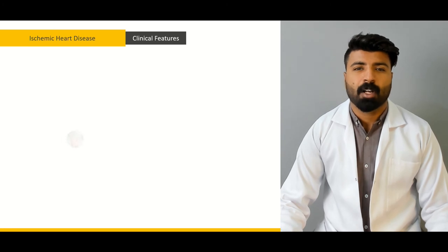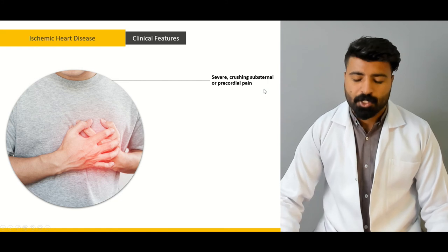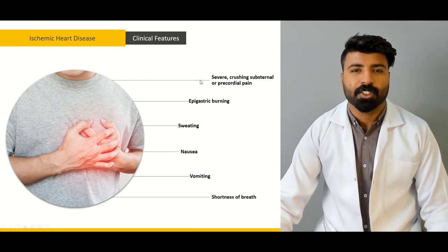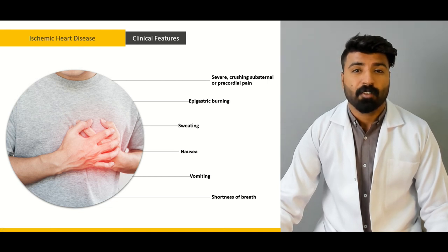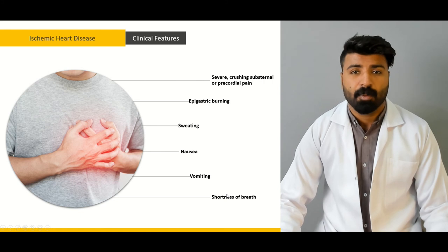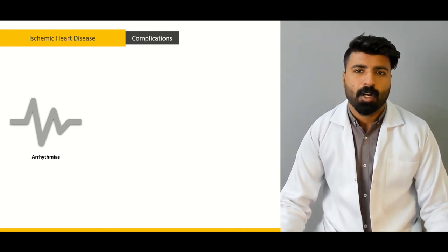The clinical features of ischemic heart disease include: severe crushing substernal or precordial chest pain due to angina pectoris, epigastric burning, sweating, nausea, vomiting, and shortness of breath. The patient is sweating profusely because oxygen delivery is failing; nausea and vomiting accompany the episode; and shortness of breath occurs because the body demands more oxygen that the ischemic heart cannot provide.